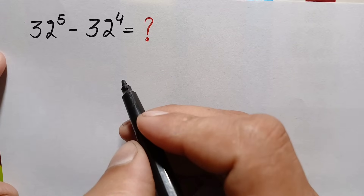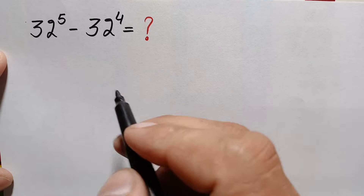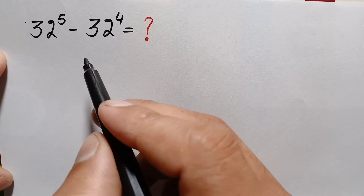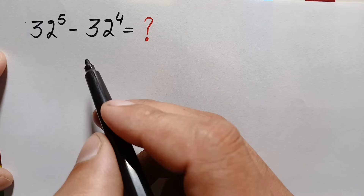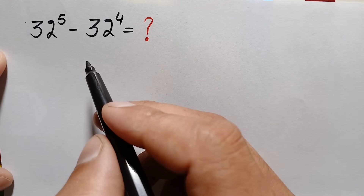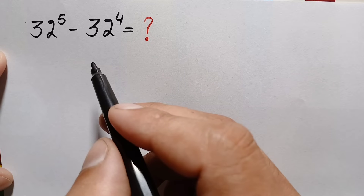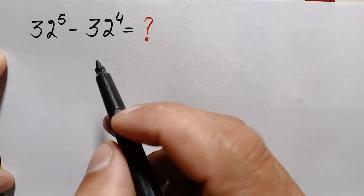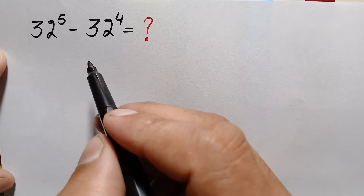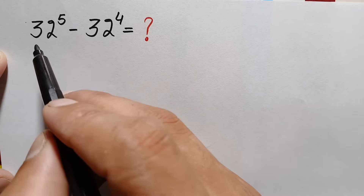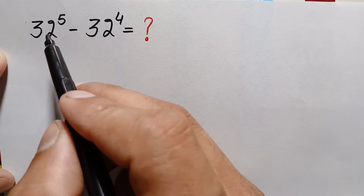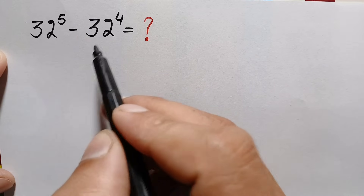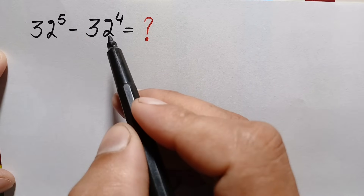Hello everyone, you are welcome. How to solve this beautiful exponential math problem without using any calculator, and with the help of different exponential identities. The problem is 32 raised to power 5 minus 32 raised to power 4.